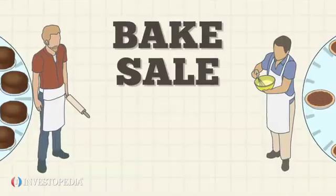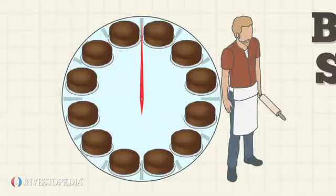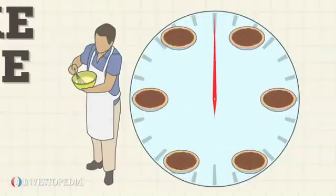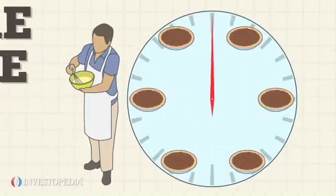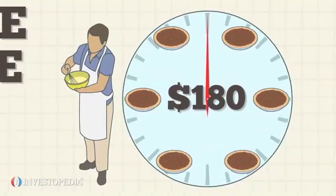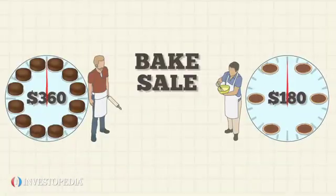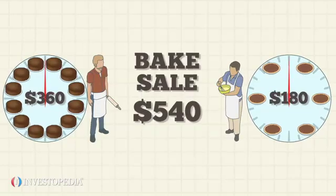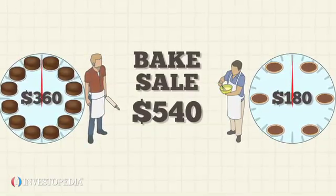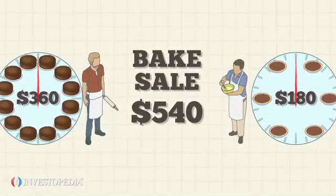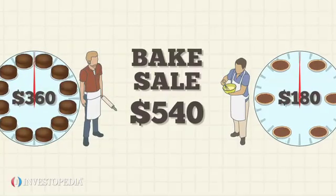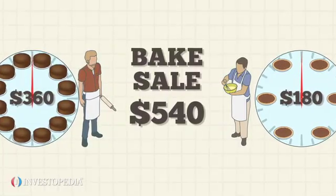If they follow this measure, David makes 12 cakes and earns $360, while Lawrence bakes six pies and earns $180. Together, they've earned $540, which is $60 more for their charity than if they hadn't specialized based on comparative advantage.